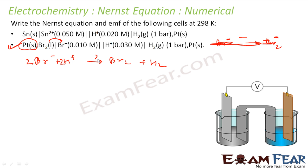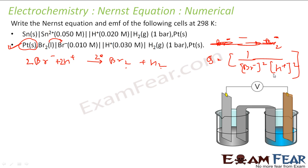Q for this reaction will be: concentration of Br₂ (gas, so treated as 1) times concentration of H₂ (gas, so also 1), divided by concentration of Br⁻ squared times concentration of H⁺ squared. E°_cell for this reaction can be found and it comes out to be −1.08 V.